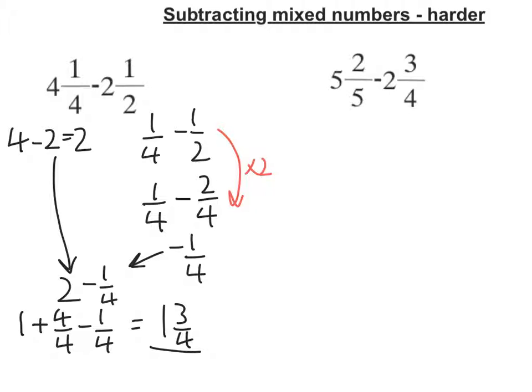Let's look at the second example. So I take away my whole numbers, so 5 take away 2 is 3. Then I take away my fractions, 2 fifths minus 3 quarters.